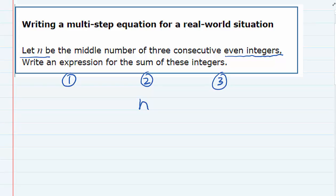So if the middle one is n, the next larger one would be n plus 2. Now we have to figure out what the first integer would be.